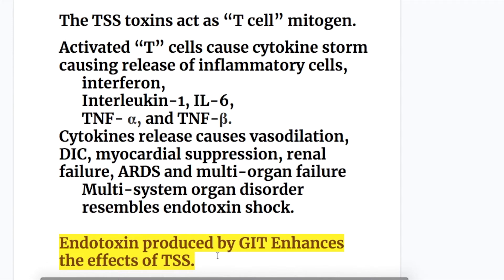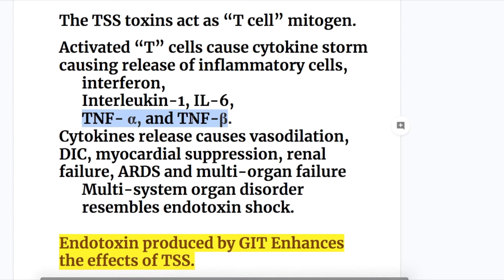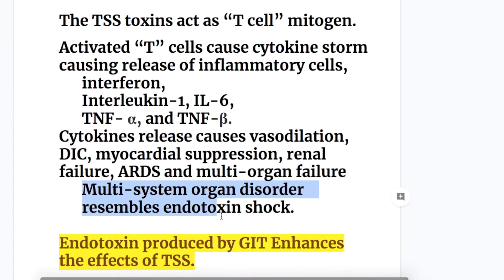How do the toxins act? Toxic shock syndrome toxins act as T-cell mitogens. Activated T-cells cause a cytokine storm, releasing inflammatory cytokines including interferon, interleukin-1, interleukin-6, TNF-alpha (tumor necrosis factor alpha), and TNF-beta. Cytokine release causes vasodilation, disseminated intravascular coagulation, myocardial suppression, renal failure, acute respiratory distress syndrome, and multi-organ failure. The multi-system organ disorder resembles endotoxin shock.